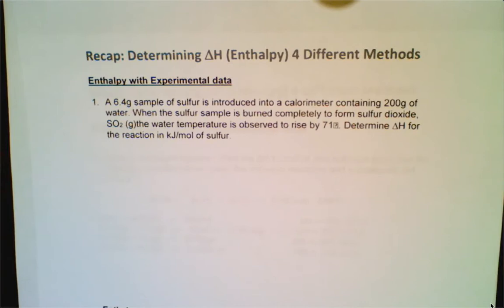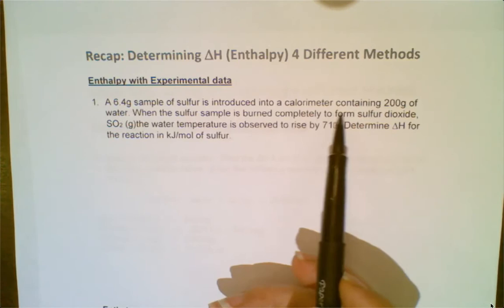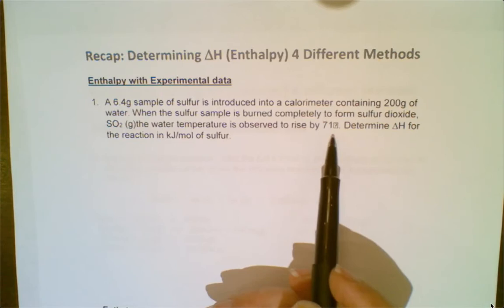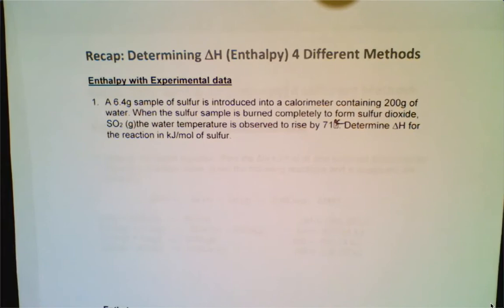A 6.4 gram sample of sulfur is introduced into a calorimeter containing 200 grams of water. When the sulfur sample is burned completely, it forms sulfur dioxide, and the water temperature is observed to rise by 71 degrees Celsius. Determine delta H for the reaction in kilojoules per mole of sulfur.